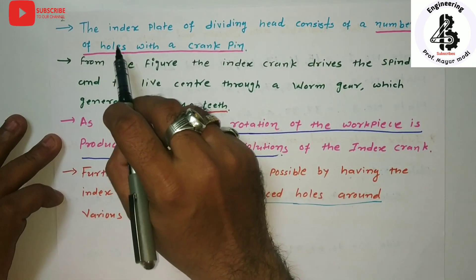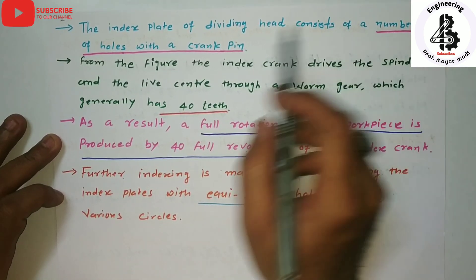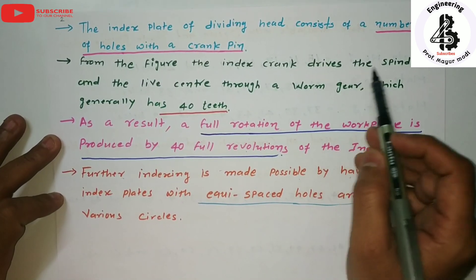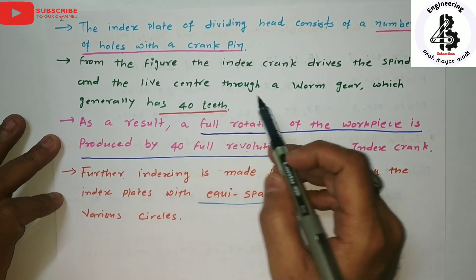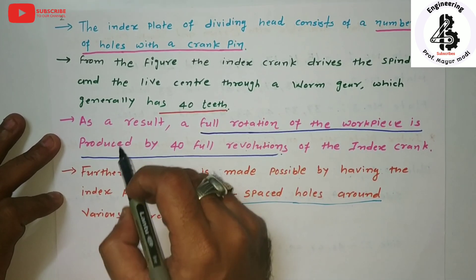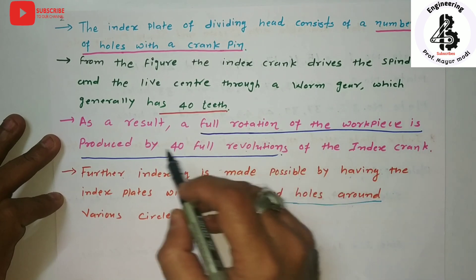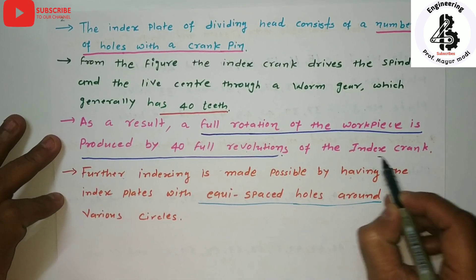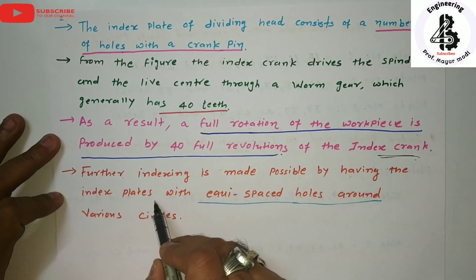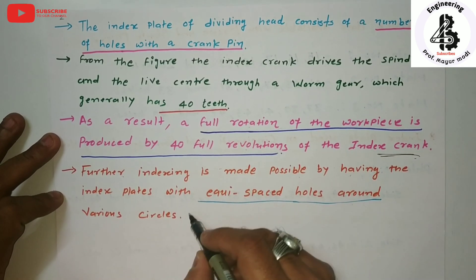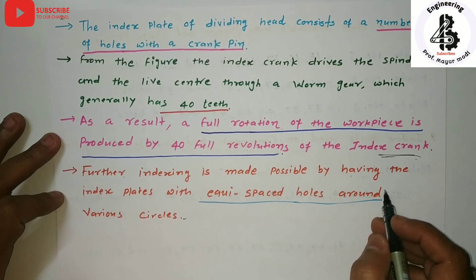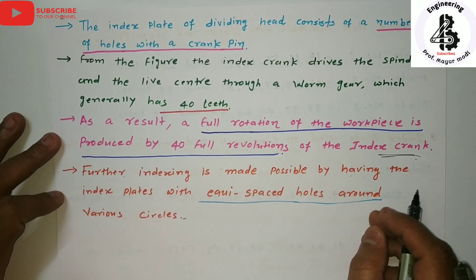The index plate of the dividing head consists of a number of holes, and the crank pin engages these holes. From the figure we can see that the index crank drives the spindle and live center through a worm and worm gear with a 40:1 ratio. As a result, a full rotation of the workpiece is produced by 40 full revolutions of the index crank. Indexing is made possible by the index plate having equi-spaced holes around various circles.